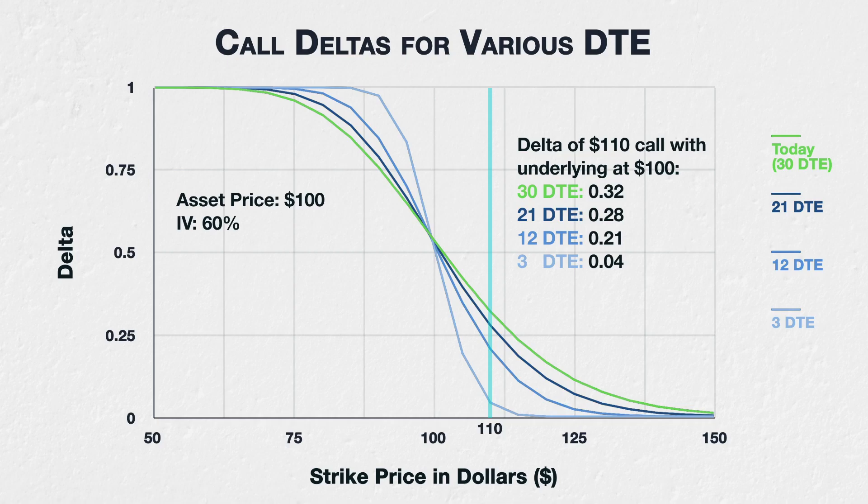The only thing that is different here is the time left before the option expires. The strike price, underlying price, and implied volatility are all the same. This difference in days to expiry from 30 down to 3 leads to deltas ranging from 0.32 to 0.04. This means that with 30 days to expiry, this $110 call option would increase in value by 32 cents if the underlying price increased from $100 to $101. However, with only 3 days to expiry, this same option would only increase in value by 4 cents for the same underlying price increase from $100 to $101.